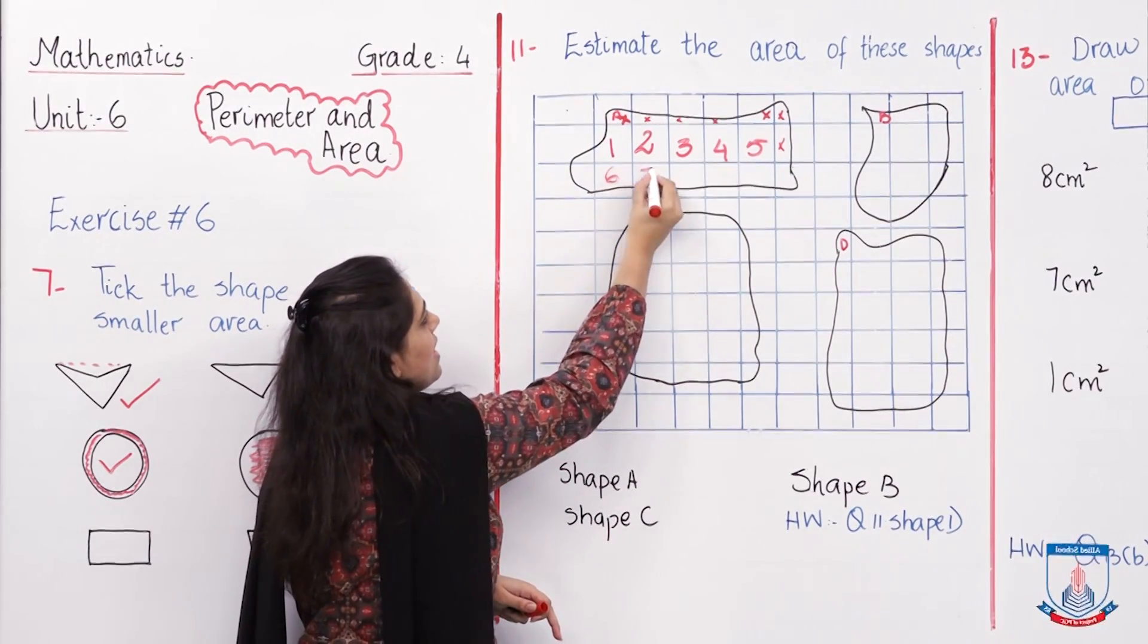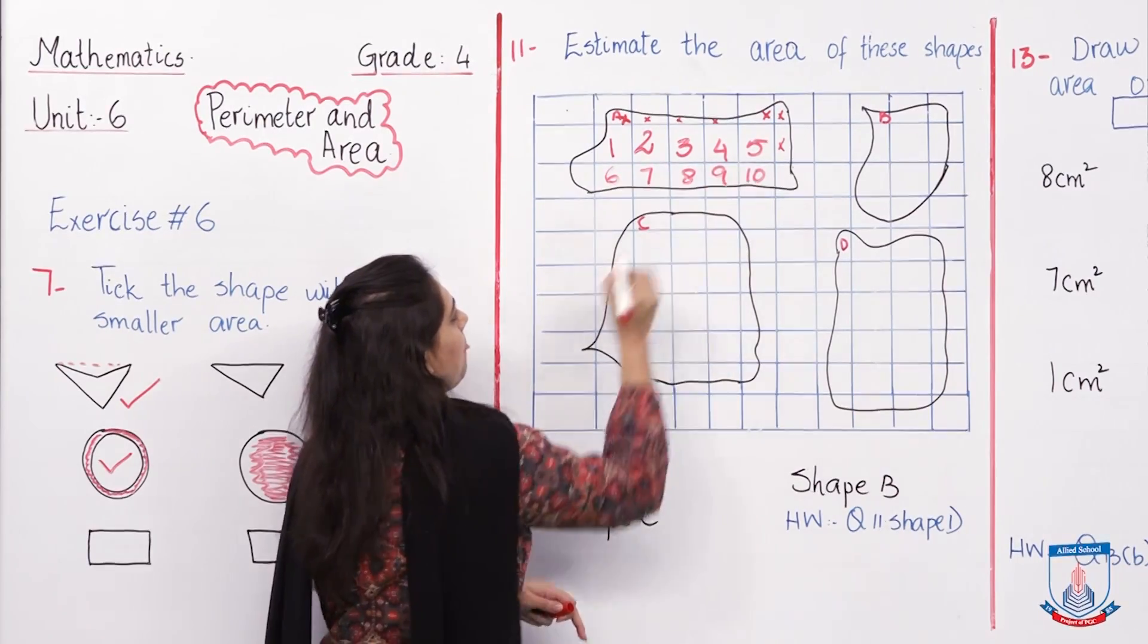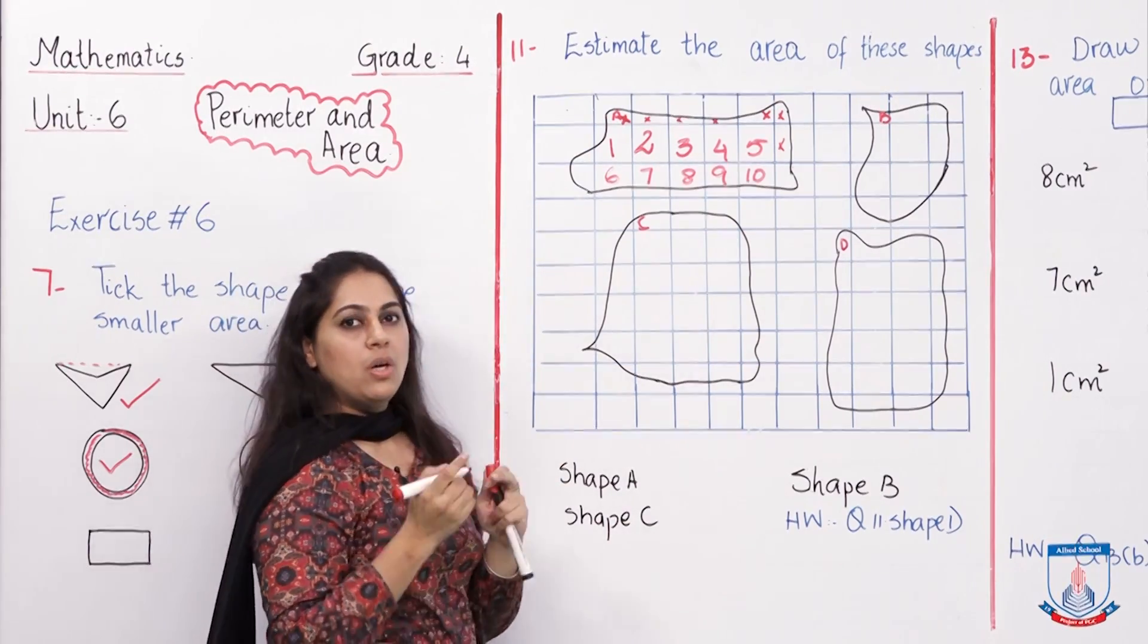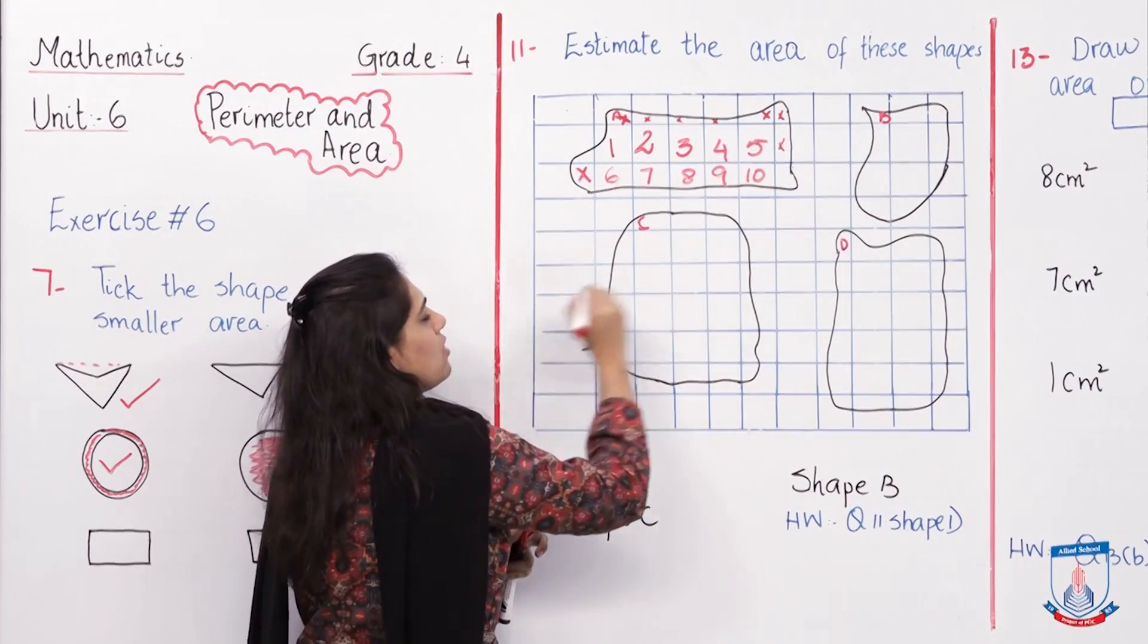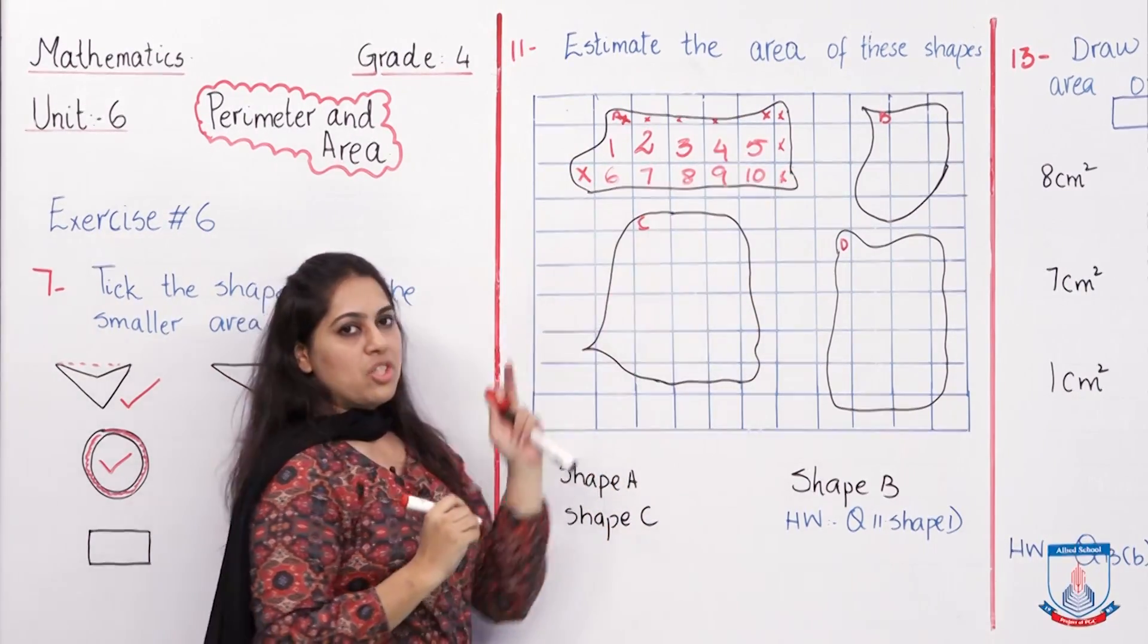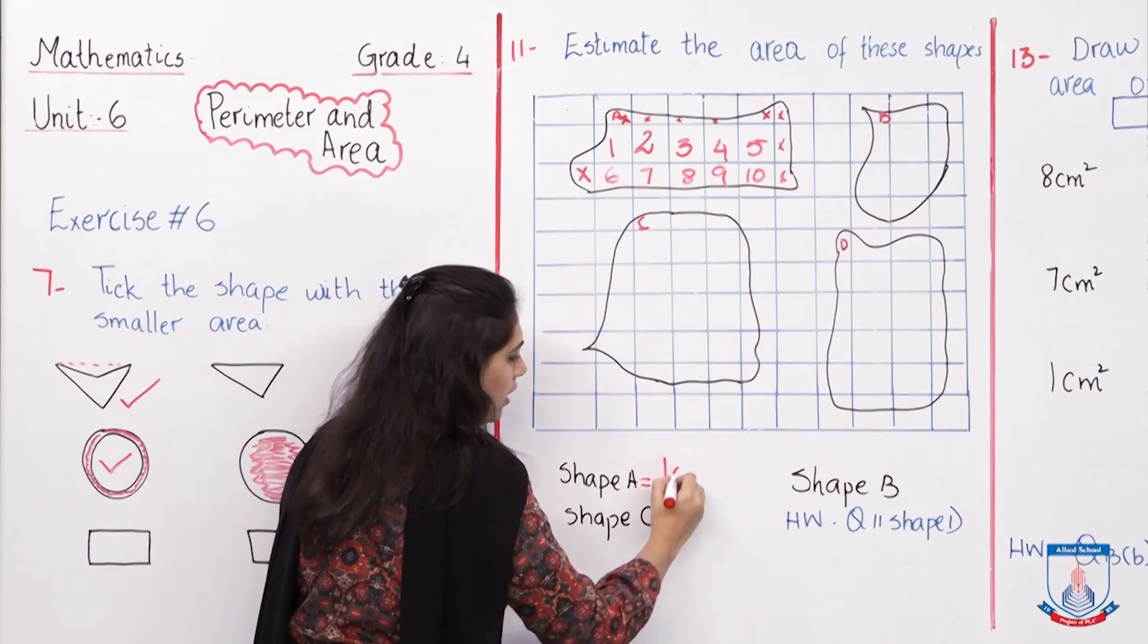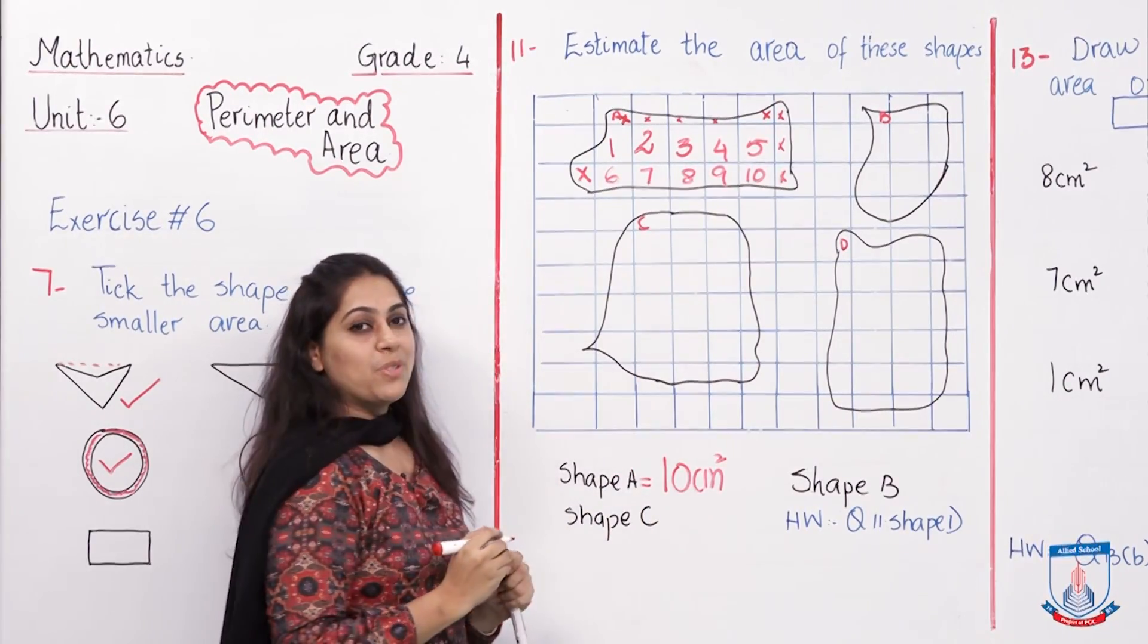Six, seven, eight, nine, and ten. Do you think should I count this part? Is this part more than half? No, I am not going to count this, so I am going to put a small cross on this. So what is the area of this shape? It is estimated, not the exact one. I am going to write the answer: 10 centimeter square.